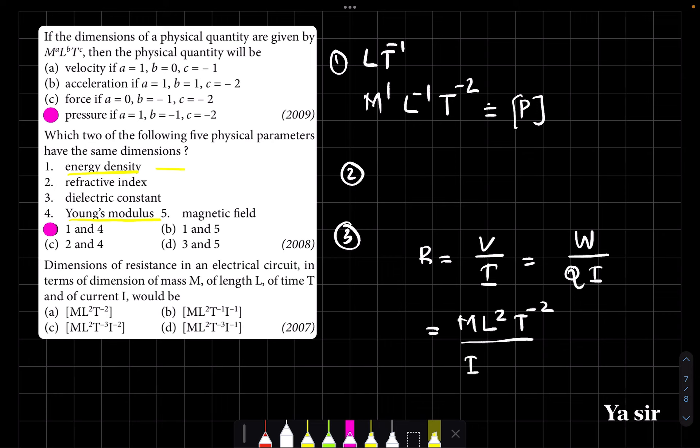ML square T to the power minus 2 divided by charge I into T. Here they used I for current. Sometimes we use A also. So I into T into I. So it is ML square T raised to minus 2. Then T again will come, T raised to minus 3. This denominator T will come on the top.